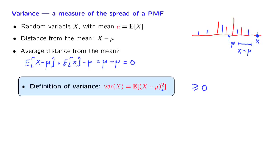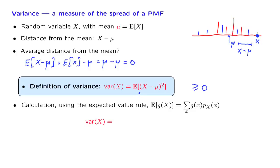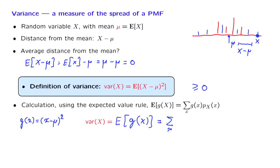How exactly do we compute the variance? The squared distance from the mean is really a function of the random variable x — a function of the form g(x), where g is defined accordingly. We can use the expected value rule applied to this particular function g. So what we do is go over all numerical values of x, calculate the squared distance from the mean, and weigh that quantity according to the corresponding probability of that particular numerical value.